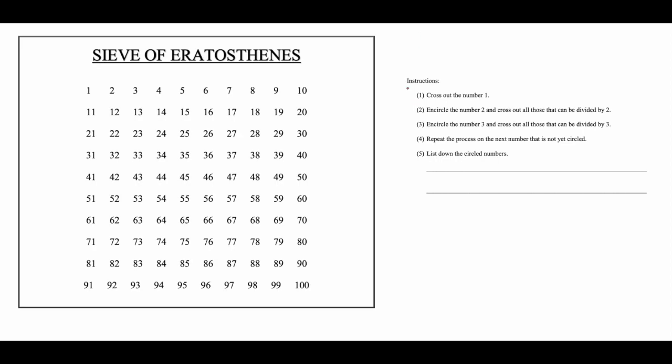Let us start by crossing out the number 1. Next, we will encircle the number 2 and cross out every second number after 2, or all those numbers that can be divided by 2.